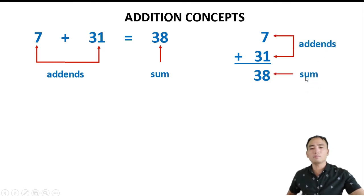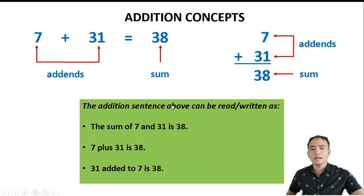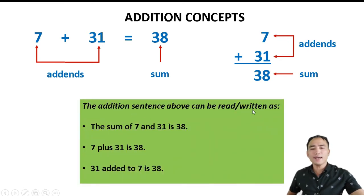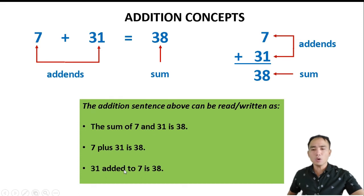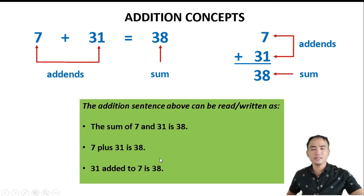The addition sentence above can be read or written as: the sum of 7 and 31 is 38; 7 plus 31 is 38; or 31 added to 7 is 38. All of these addition sentences are true.